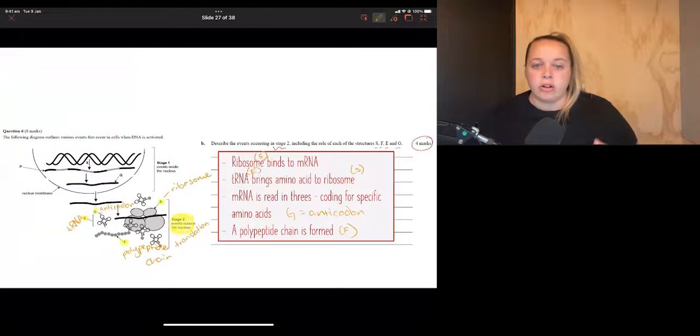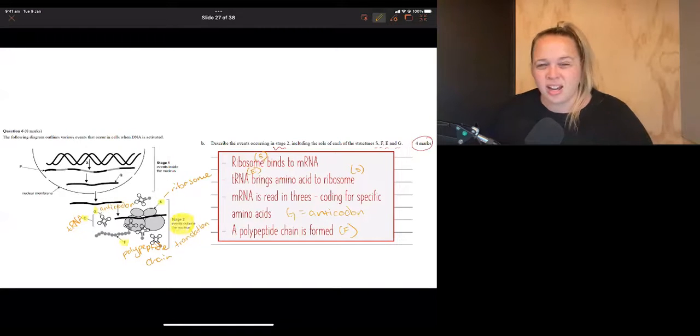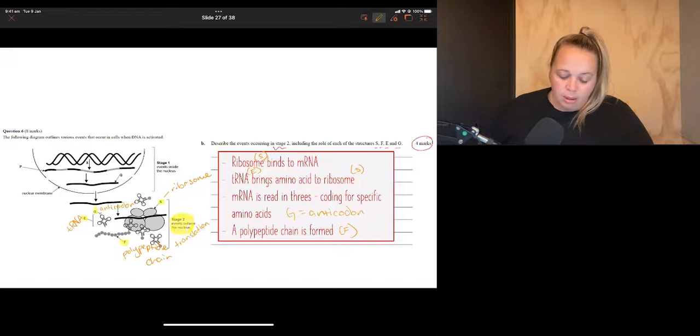So you can see there that I've not only used the information that we understand about translation and when we write down those dot points, but I've linked it to the question by making sure that I'm putting in the correct letters to correspond with the diagram. And that's the way that you can really fully pull out those four marks within that question.